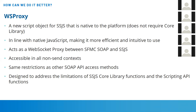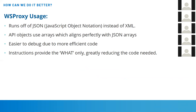WSProxy has the same restrictions as other SOAP API access methods, and it's designed to address the limitations of the server-side JavaScript core library functions and the scripting functions we talked about earlier. How do you use it? It runs on JSON instead of XML, which in my personal opinion is a huge benefit — I much prefer JSON over XML. API objects use arrays, which pair perfectly with JSON. It's easier to debug since it's more efficient code, and the instructions only provide the what instead of the how.